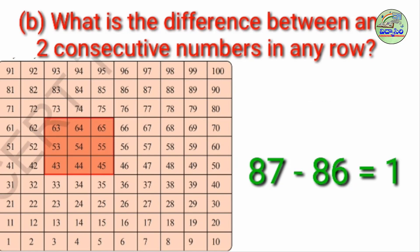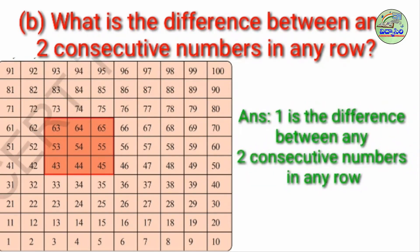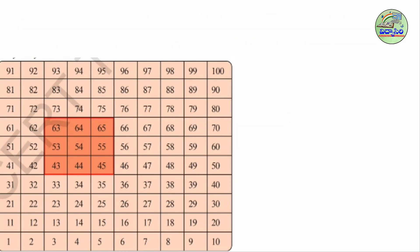1 is the difference between any two consecutive numbers in any row. If you want to check it, take any two consecutive numbers from any row and find the answer — you will get 1 as the difference. Do you understand, children? Very good, I think you tried.